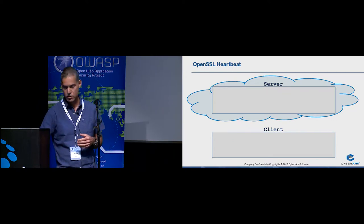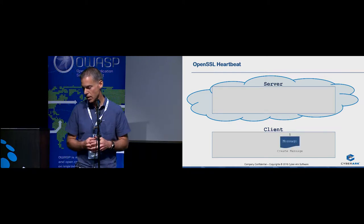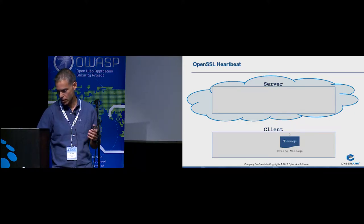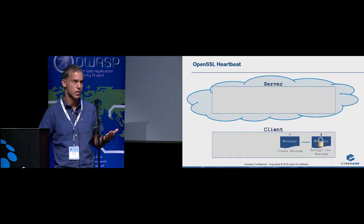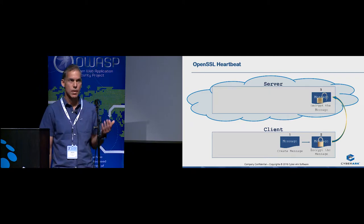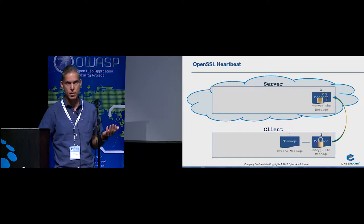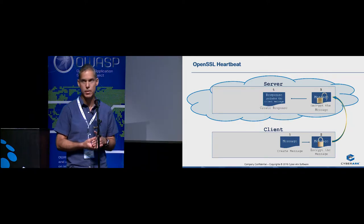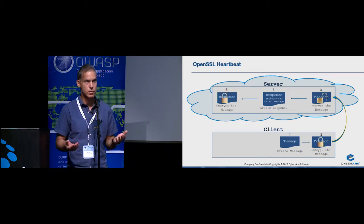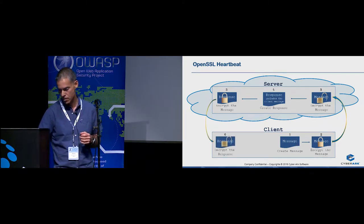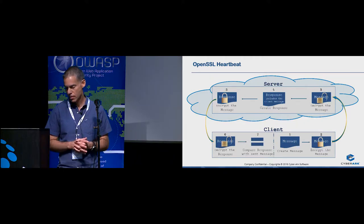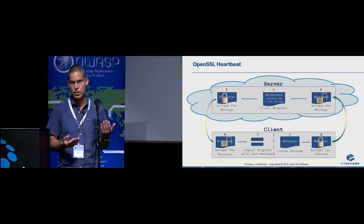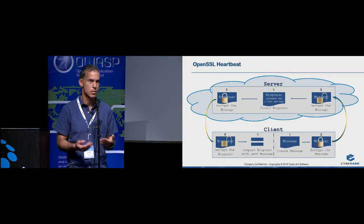Let's go through the process and see how the client checks together with the server that the session is still on. The client begins by creating a message — the payload is just a random set of characters. The client encrypts it with the session key it still has from the previous session and sends it to the server. If the server still has the same session key, it can decrypt the message, take out the payload, and create the response using the same exact payload it got from the client. It decrypts the payload, creates the response with the same session key, and sends it back to the client. The client decrypts the message and compares the two payloads — the one it sent and the one it got back from the server. If they are the same, everything is fine and they can continue. The heartbeat is configurable — it can run every second, every few minutes.